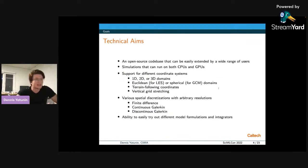Some more technical goals of the CLIMA project. We're trying to create an open-source codebase that is easy to understand and can be extended by a wide range of users, be it domain experts who have been doing climate science for many years and new people who are just interested in the field. We want simulations that can run on both CPUs and GPUs, and we want to support a very wide range of different coordinate systems for our simulations.